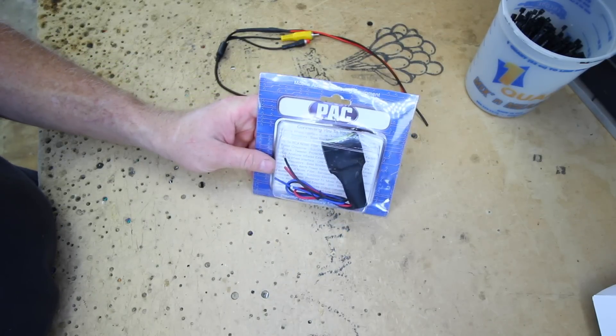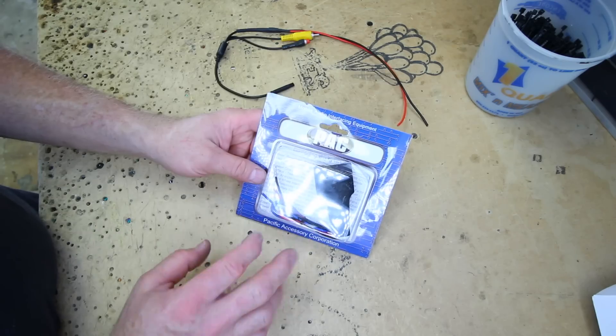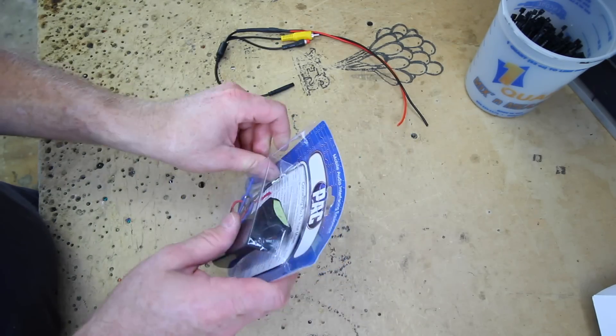So what you're going to want to do is pick up this guy right here. It's a PAC-Audio CS-S12 power line noise filter.